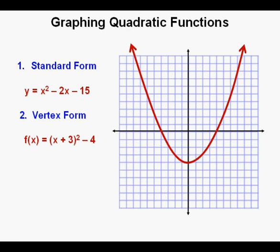We'll learn how to graph quadratic functions written in vertex form. We'll graph the function f of x equals quantity x plus 3 squared minus 4. And finally, we'll graph equations in factored form. We'll graph the function y equals quantity x minus 5 times quantity x plus 1.